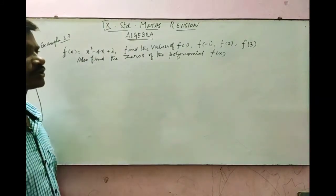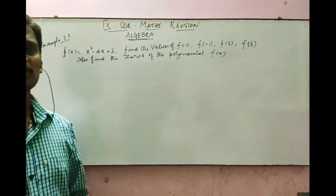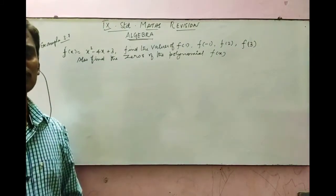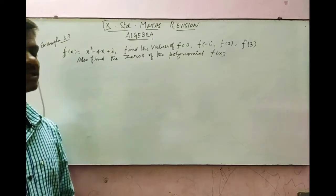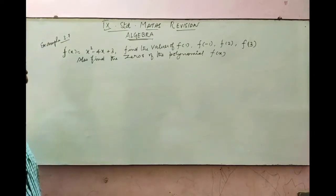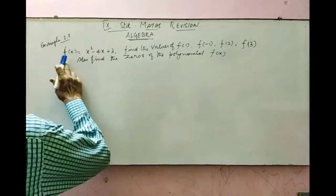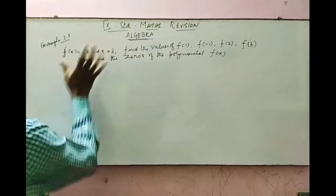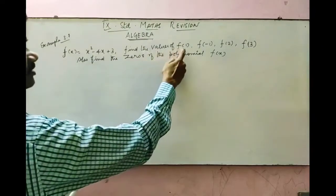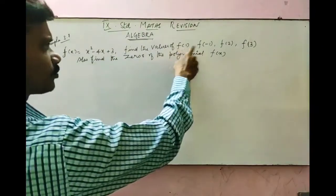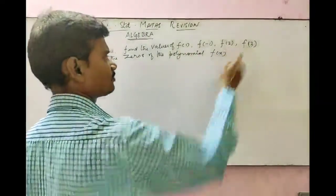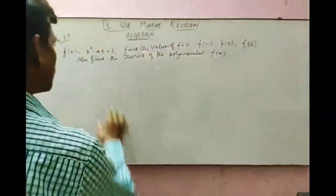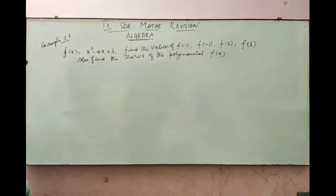Next, we are going to know how to find the value of a polynomial and the zeros of a polynomial. The first example is 3.7. The question has f of x equal to x squared minus 4x plus 3. We have to find the values of f of 1, f of minus 1, f of 2, and f of 3, and also find the zeros of the polynomial.